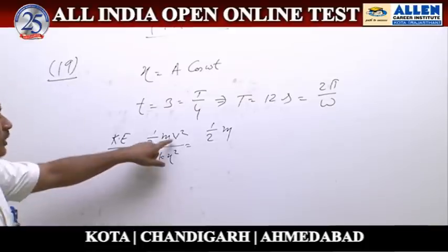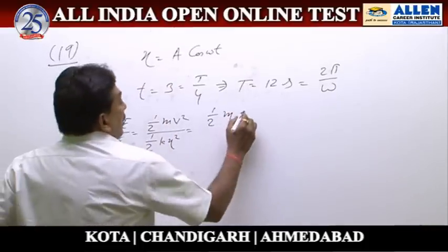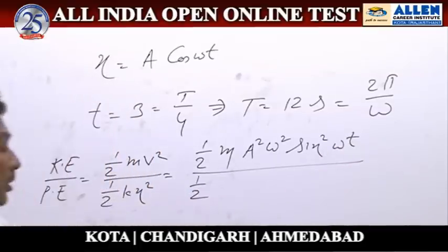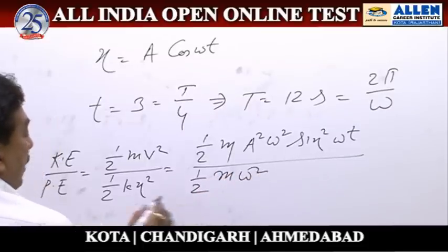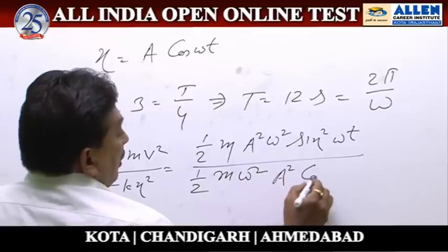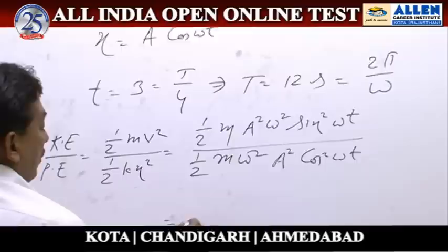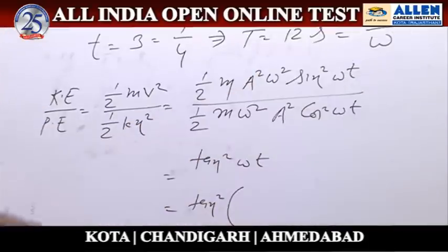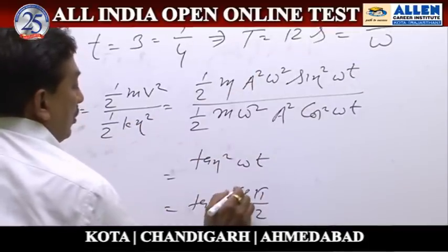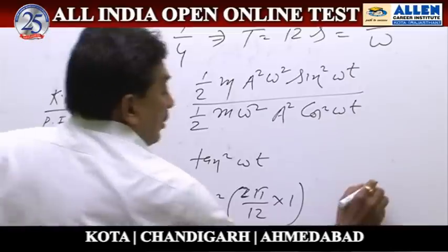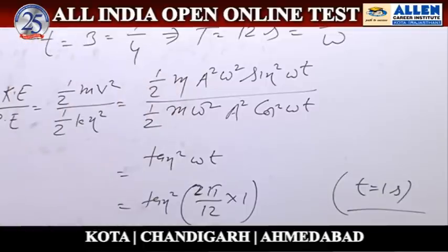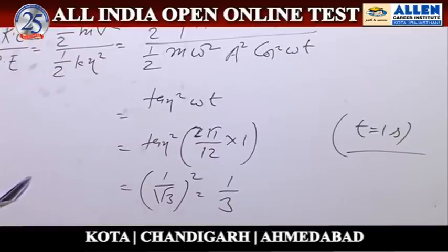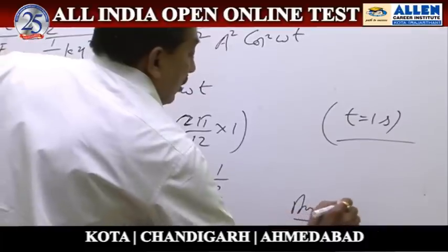So 1/2 m — we want to calculate v, so after differentiating the equation, we obtain a² ω² sin²(ωt) divided by 1/2 k. Since k = mω², placing the value of x = a cos(ωt), we obtain the ratio equal to tan²(ωt). From here ω = 2π/12, and t = 1 second as given. So the ratio equals 1/√3, and answer 3 is correct.